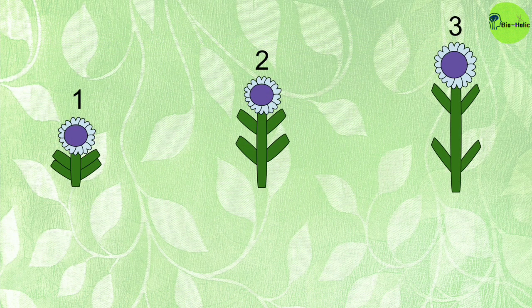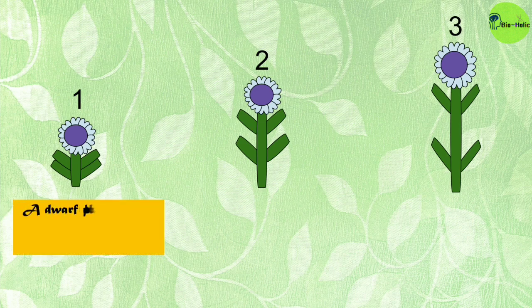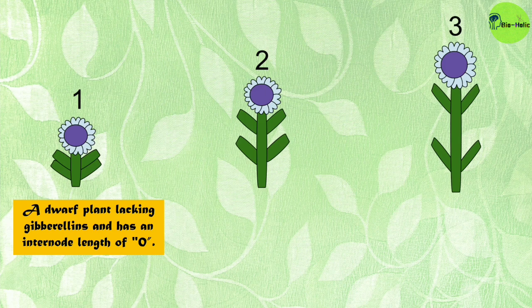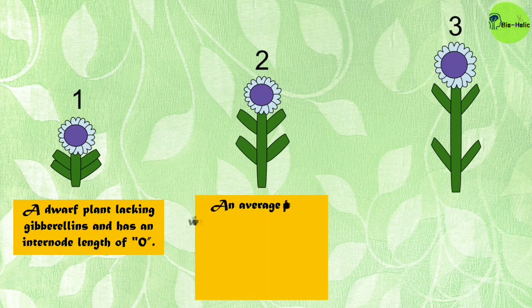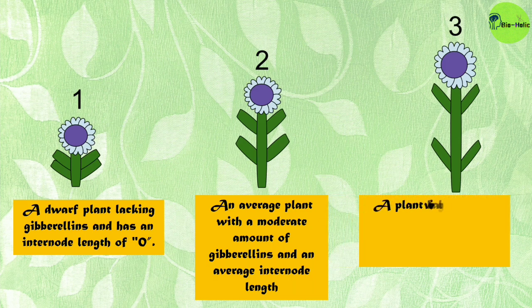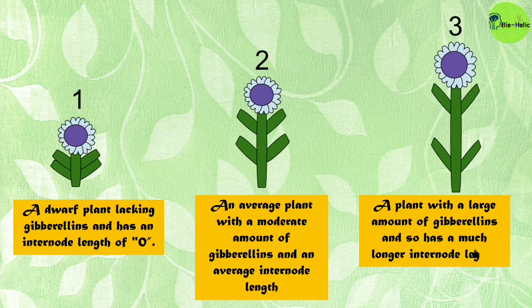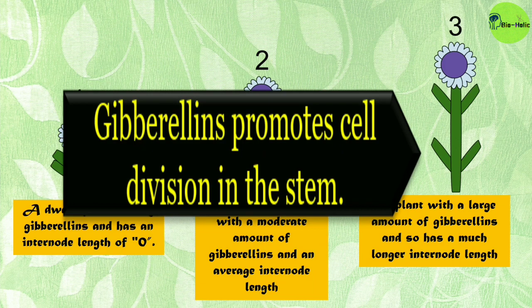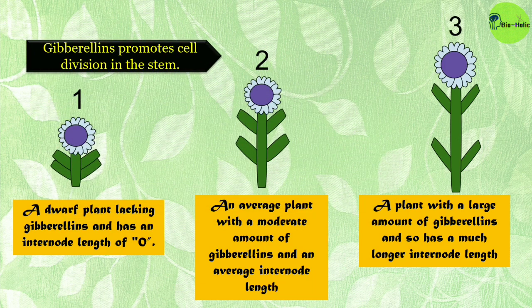Here you can see three different types of plants: number one is a dwarf plant lacking gibberellins with an internode length of zero; number two is an average plant with a moderate amount of gibberellins and an average internode length; and number three is a plant with a large amount of gibberellins and a much longer internode length. This shows that gibberellins promote cell division in the stem and elongation of the internodes.